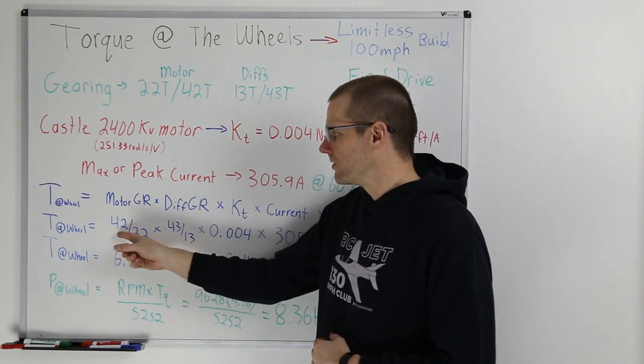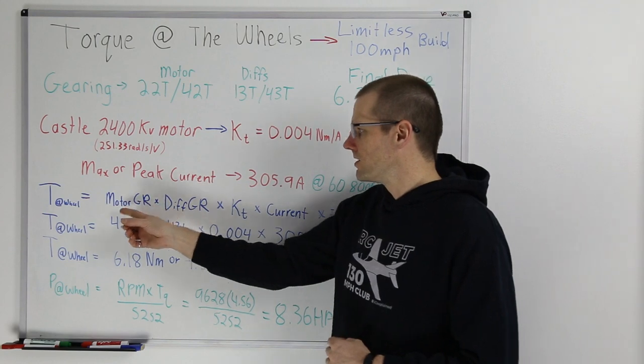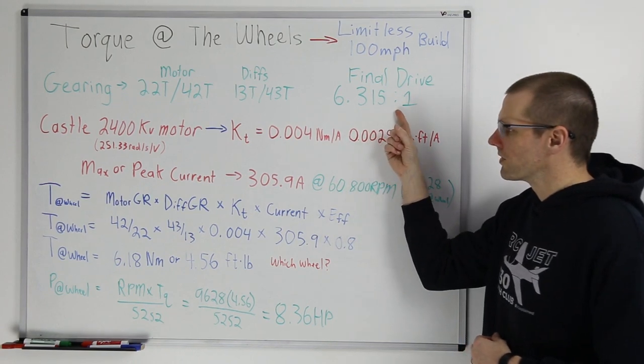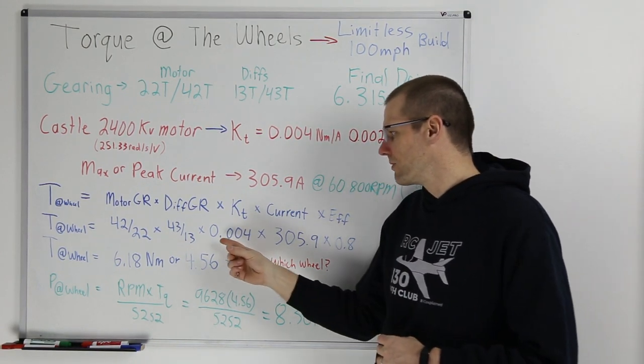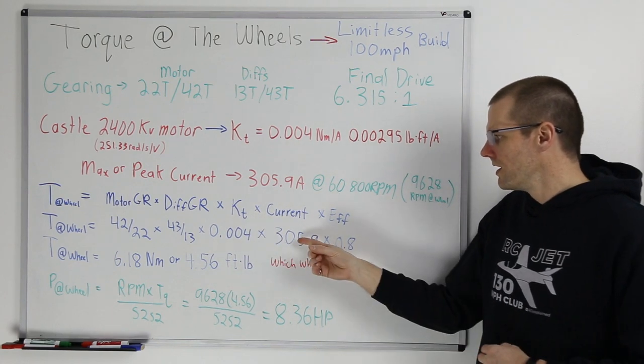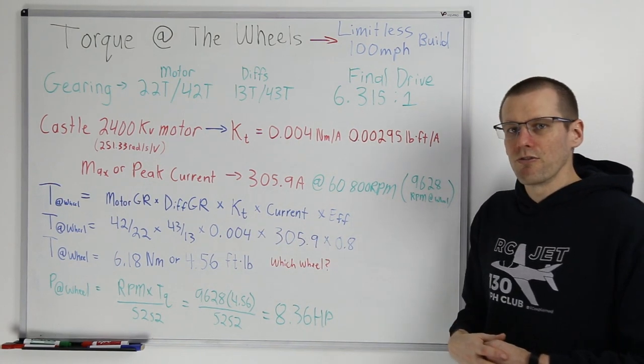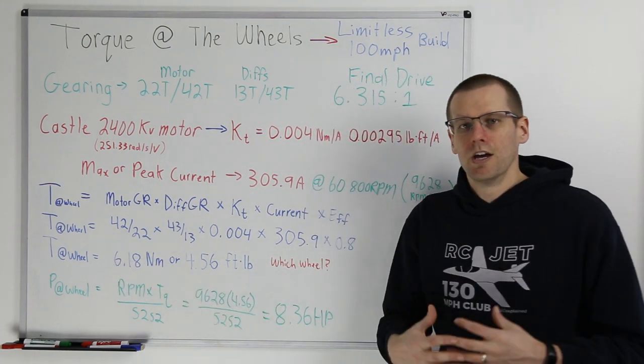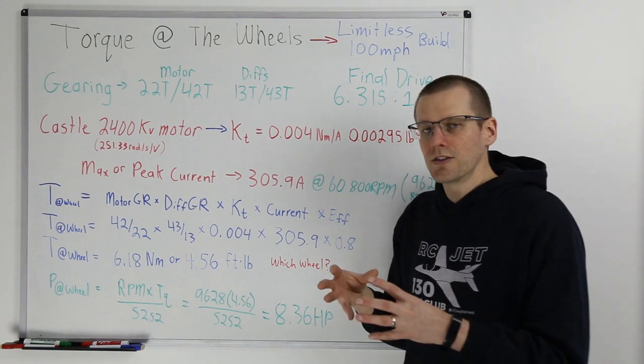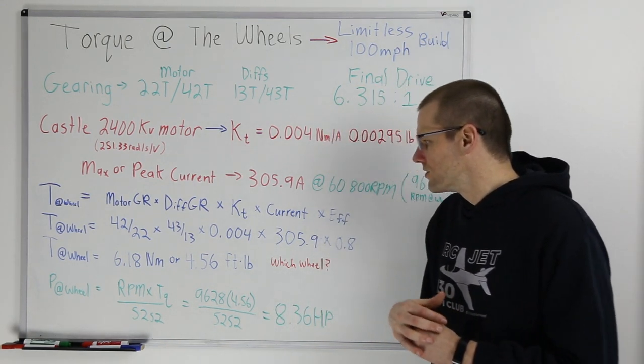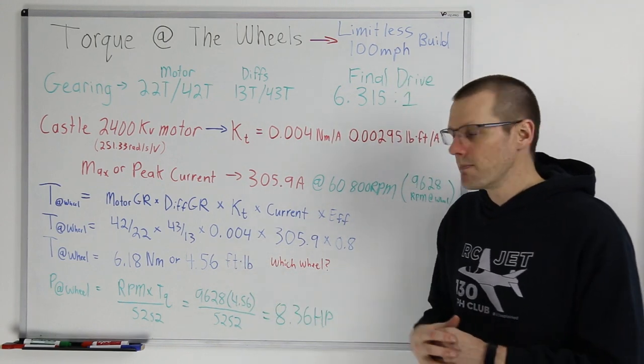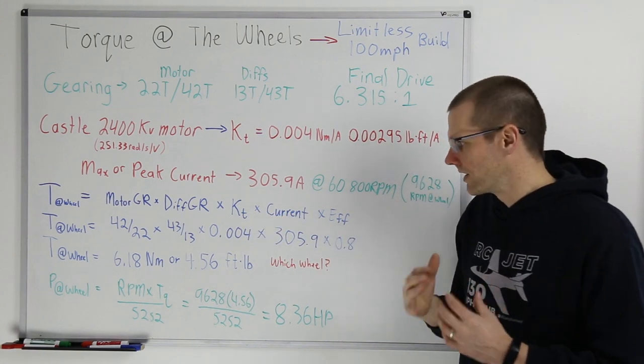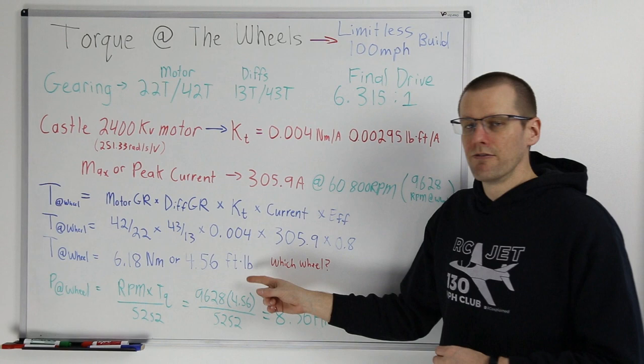Now we sub all those numbers in. 42 divided by 22 is going to give us the gear ratio there at the motor, and then 43 divided by 13. You take both of those values, and like we said, we're going to get 6.315. So we take 6.315, we multiply it by our kT of 0.004, and our current of 305.9, as well as our 0.8 efficiency factor, and that's where we get 6.18 newton meters of torque coming at the wheels of our Arma limitless. Now if we do represent this differently in our pound feet or foot pounds units there, all we did is take this value and replace it for our kT value here, we get 4.56 foot pounds of torque.